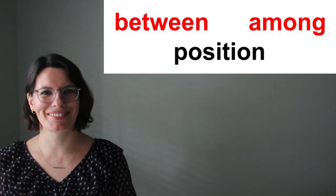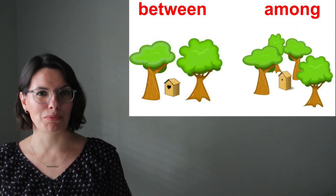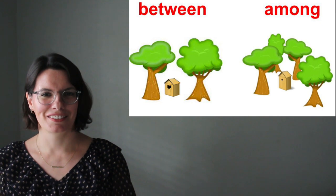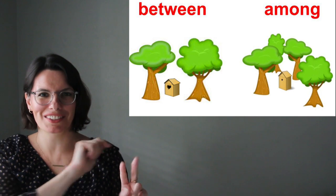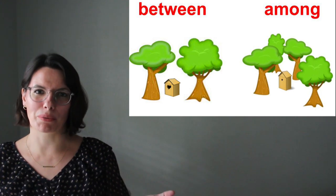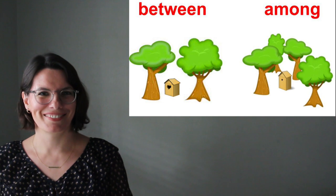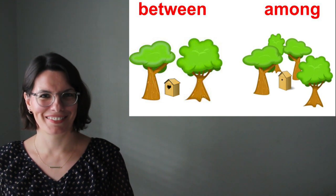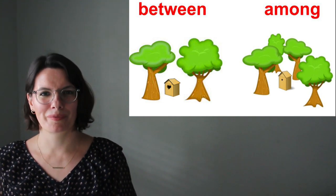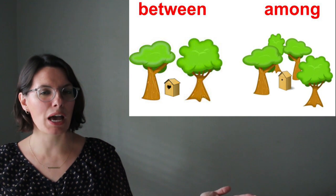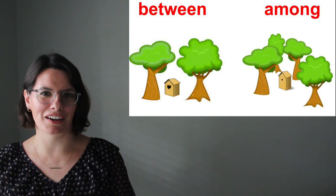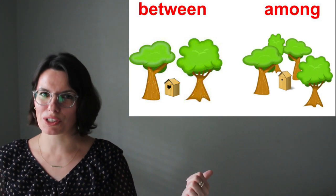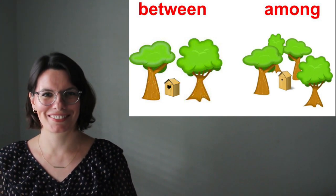Let's look at some examples. There is a birdhouse between the two trees. There are two trees and the birdhouse is between the two trees. Is there a birdhouse between the two trees? There is a birdhouse among the trees — there are more than two trees, so we say among. Is there a birdhouse among the trees?